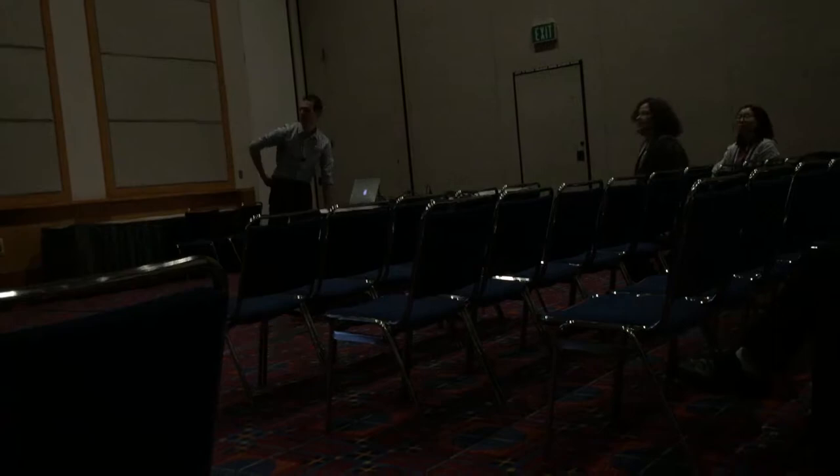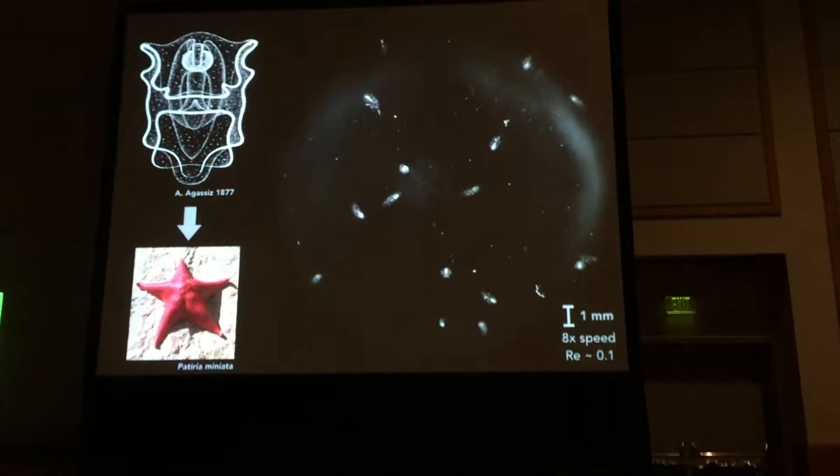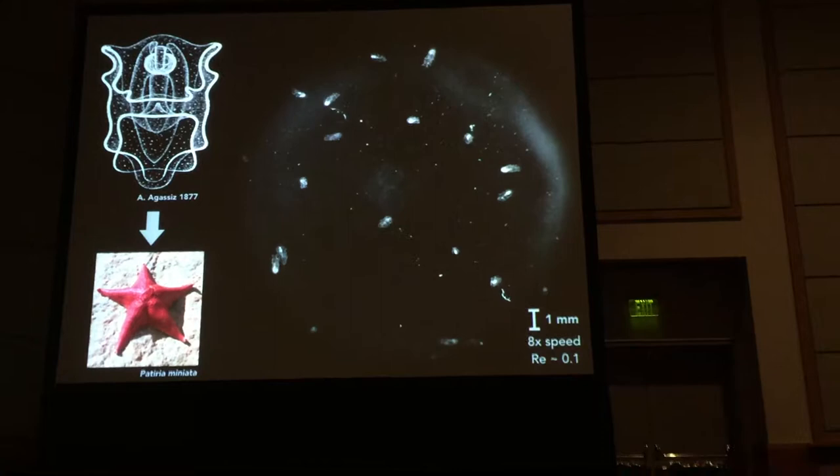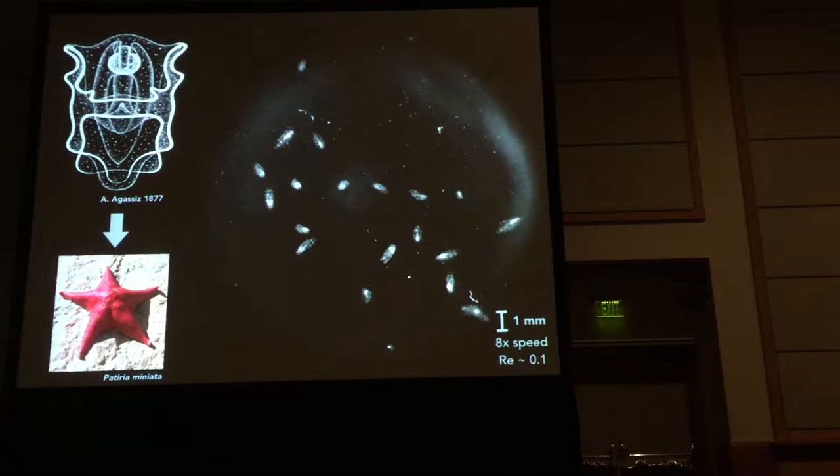People have been studying starfish larvae for almost 200 years. The reason is that starfish larvae were seen as one of the first cases in animal evolution where in the development of a juvenile attributed form, with a developmental plan that's qualitatively different from that of the adult. Starfish are important because they're one of the first cases where you see the emergence from the biphasic life cycle.